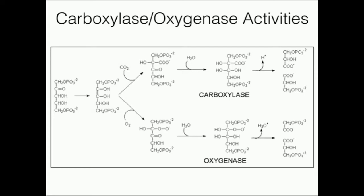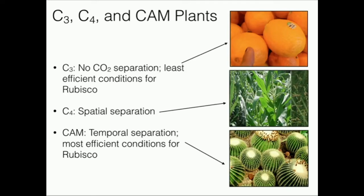These are two activities of rubisco. The carboxylase activity is preferred, but if there is oxygen present, it will react with oxygen. There are three main types of plants: C3 plants, C4 plants, and CAM plants.